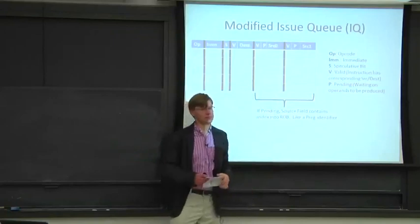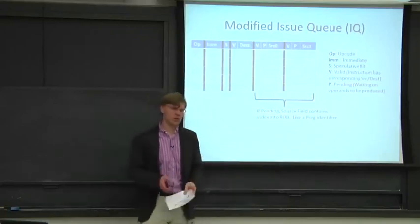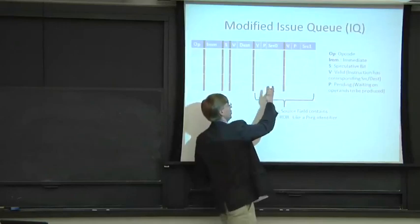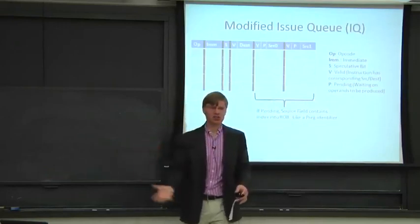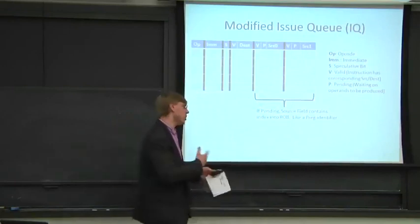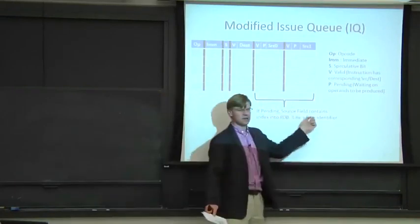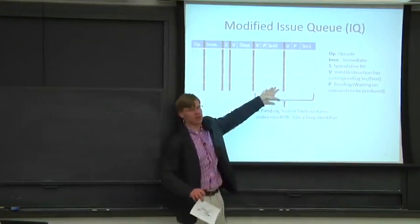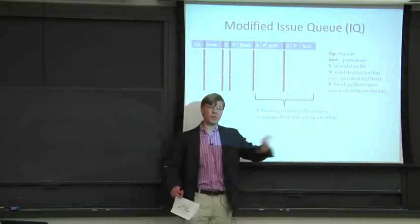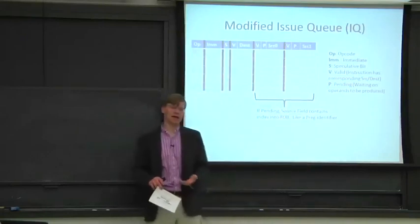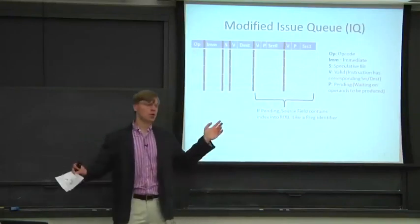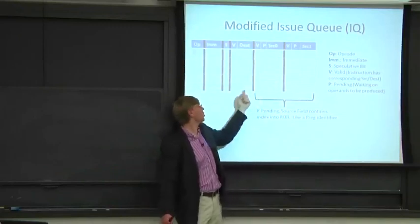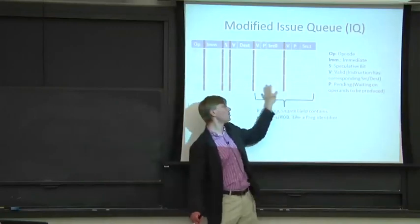From the Tomasulo algorithmic perspective, there are broadcasts coming back. When reorder buffer entry 7 commits — or really just finishes — the value gets deposited in the reorder buffer. We can pick that value out and store it in the instruction queue entry. Other instructions that are renaming and executing may overwrite that reorder buffer slot, but because we store the value in the instruction queue, we have the most up-to-date value for that register. It's no longer pending, it's valid and ready to go. We might have to wait for both source operands to be ready before an instruction can leave the instruction queue.